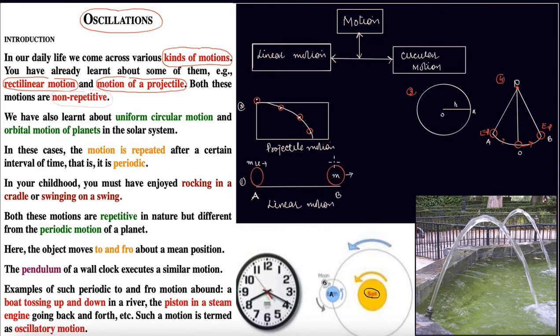We have also learned about uniform circular motion, where a particle moves in a circle with constant speed and its direction is regularly changing. Orbital motion of planets, like planets rotating around the sun, is another example. Here you can see the sun is at the center of the system, Earth is revolving around the sun, and the moon is revolving around the Earth. These are examples of periodic motion.